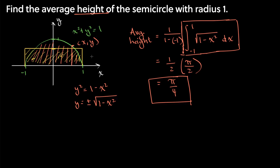But one thing — and why we're talking about this — is I slipped something by you in this first calculation. I said find the average height of the semicircle with radius 1, and then I tacked on "with respect to x." That piece of information is super important, because we could also find the average height of the semicircle with radius 1 with respect to something else — like arc length — and maybe we'd get a different answer.